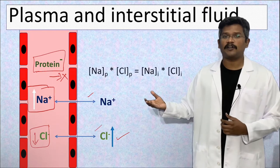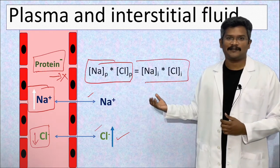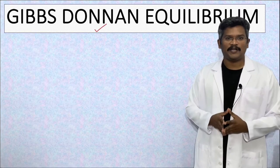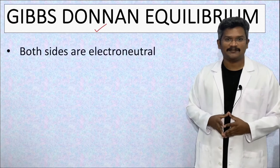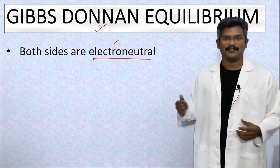At equilibrium, the product of permeant ions on one side is equal to the other side. This equilibrium is called Gibbs-Donnan equilibrium. At equilibrium, there is electroneutrality which means the total number of positive ions and negative ions on each side is equal.